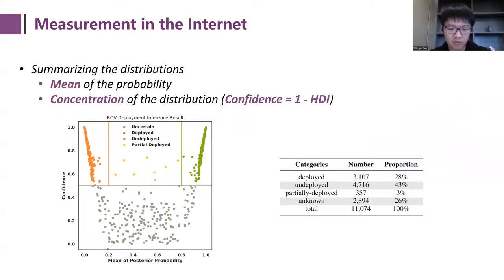Then for the convenience of analyzing, we use two metrics to summarize each marginal distribution. The first is the mean of the probability, which shows how likely each AS is to adopt ROV. The second is the confidence, which can represent the concentration of the distribution and shows how confident we are about our judgments. After setting thresholds for the metrics, we divide the ASes into four classes and corresponding numbers are listed in the right table. As we can see, our measurements show that together with ROA, ROV is also showing a promising trend in its deployment. More analysis about the measurement results can be found in our paper.